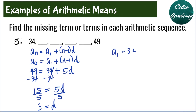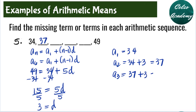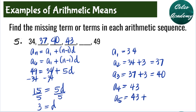Since our first term is 34, the second term is 34 plus 3, which is 37. The third term is 37 plus 3, which is 40. The fourth term is 40 plus 3, which is 43. The fifth term is 43 plus 3, which is 46. And adding 3 again gives 49 for the sixth term. So the 4 arithmetic means are 37, 40, 43, and 46.